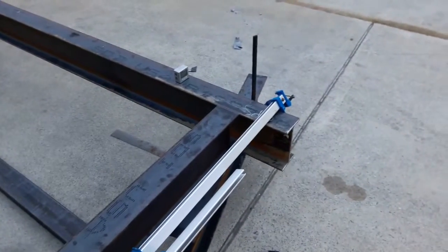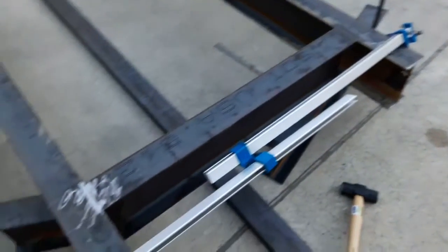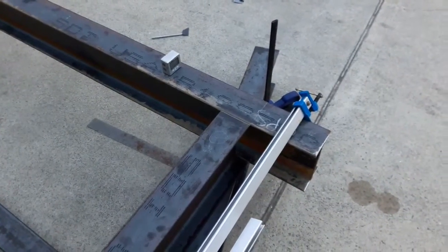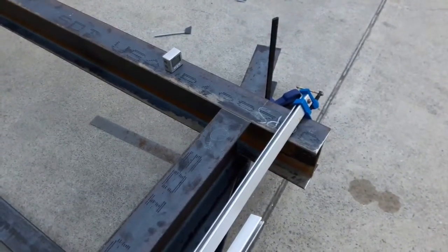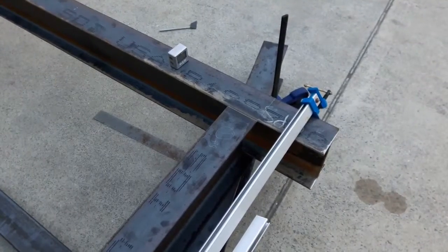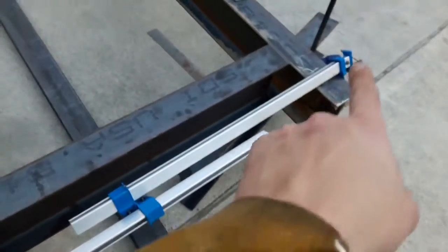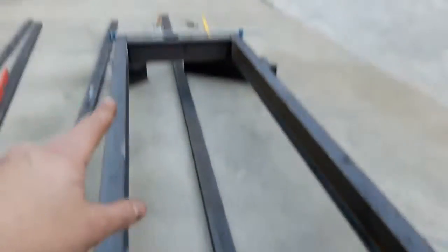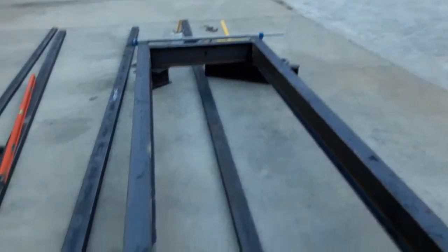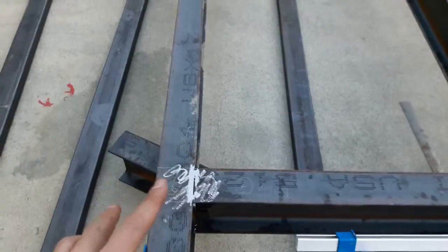So that's it. I'm going to tack it up down there first and then check for square again, make any leveling adjustments on this side and tack it up here. And then I can take these clamps off here and that clamp down there.